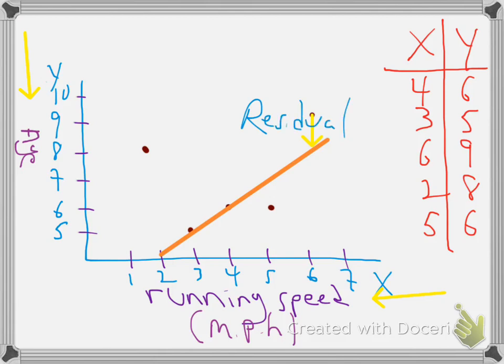And the regression line, which is this thing right here, is the line that gives you the smallest sum of the squared residuals. And this is known as OLS, Ordinary Least Squares Regression.